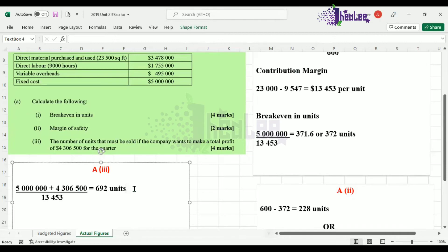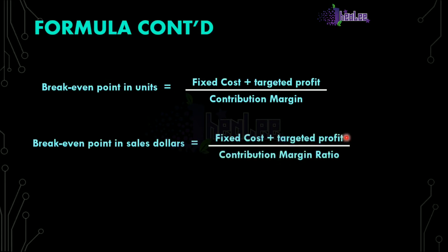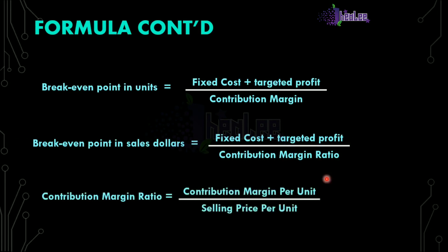So if the business wants to generate a profit of $4,306,500 using the actual figures, they would have to sell 692 units. But there is another way to calculate this — using the break-even point in dollars, where you add fixed costs and targeted profit and divide by the contribution margin ratio. To get that, it is the contribution margin per unit divided by the selling price per unit.